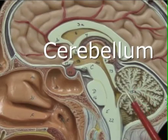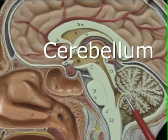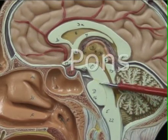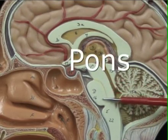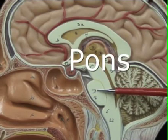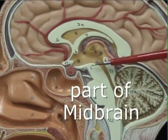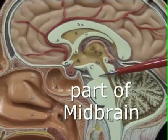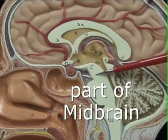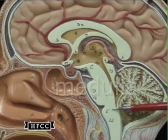Then the cerebellum — this large item in brown with the white. The pons is that bulge right there, meaning bridge, connecting one part of the brain to the other. And the midbrain here, that area.